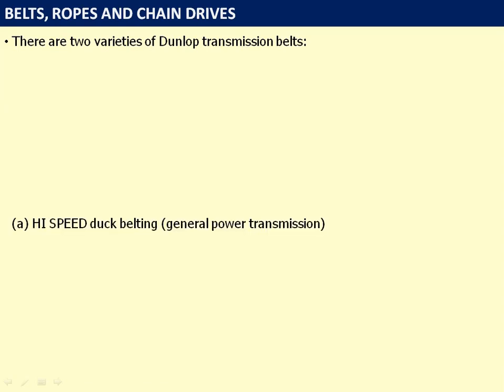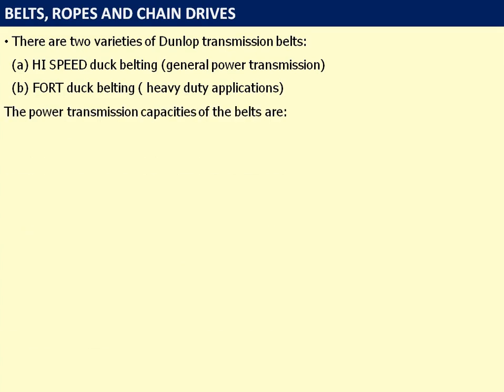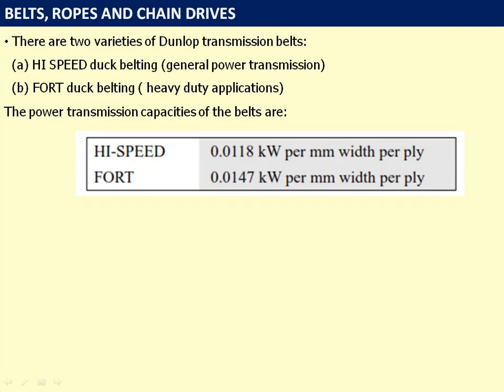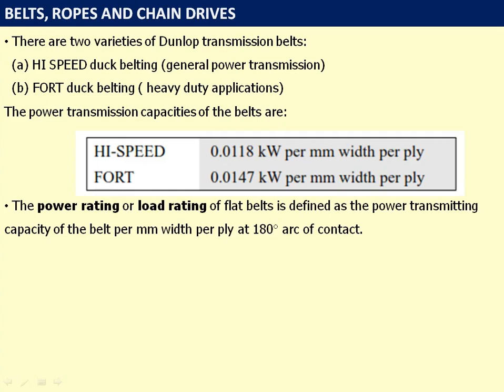There are two varieties of Dunlop transmission belts: high-speed duct belting, for general power transmission, and fourth duct belting, commonly used for heavy duty applications. Power transmission capacity for high-speed duct belting is 0.0118 kW per mm width per ply. The power or load rating of flat belts is defined as the power transmitting capacity per mm width per ply at 180° arc of contact.